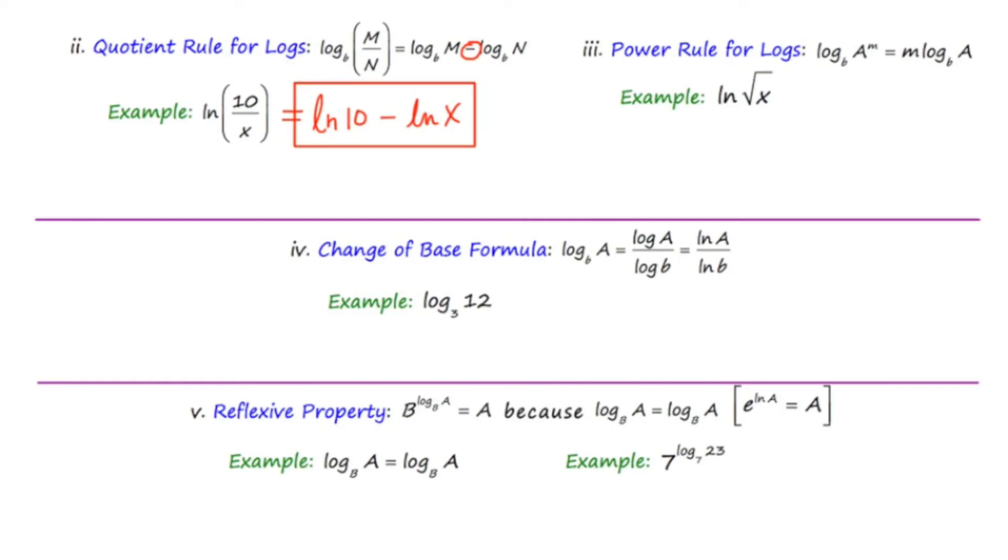Now we're going to go on to the power rule for logs, which states that if you're taking the log of something that's being raised to a power, that power can leap in front of the word log. So if I'm taking the log of a to the m base b, that can be rewritten as m log a base b because that power of m can leap down in front.